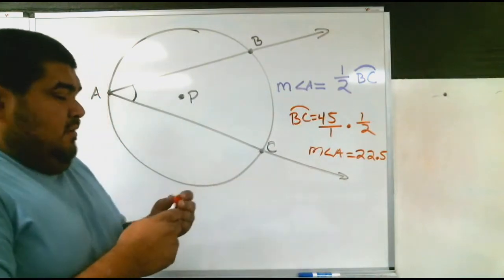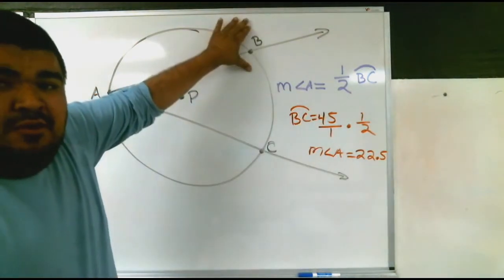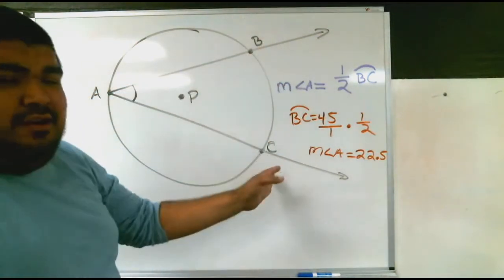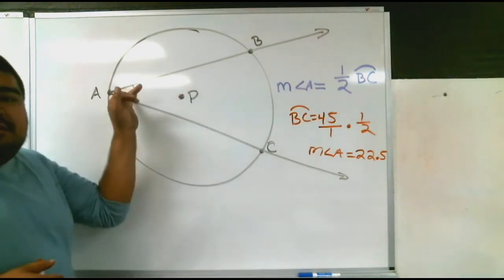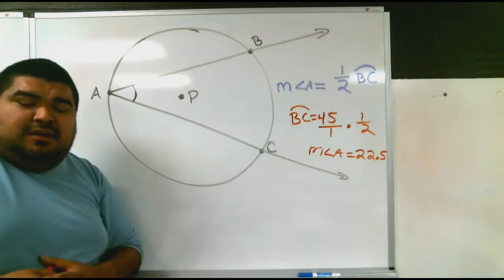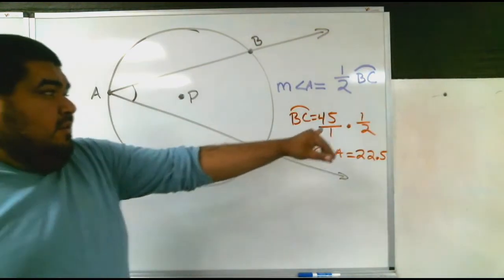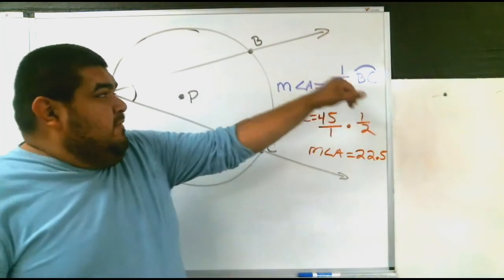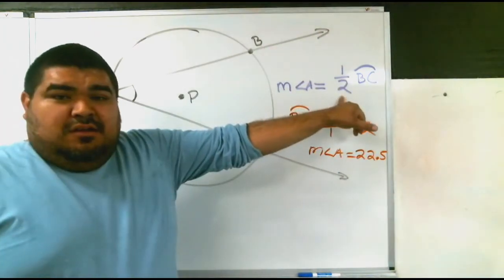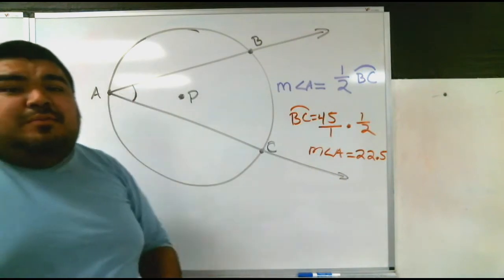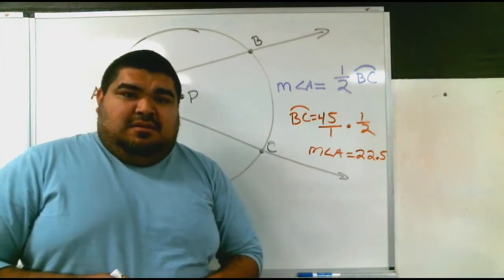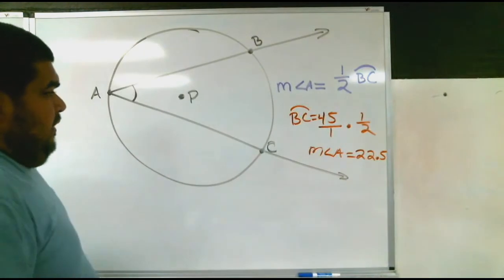What if I were to say measurement angle BC, the arc, is 30? What would the inside angle be? Remember, 30, we cut it in half. Because BC is 30, cut it in half is 15. So measurement A will be 15. Very simple.